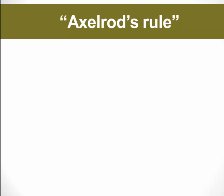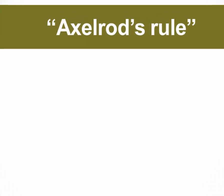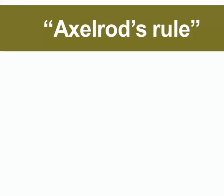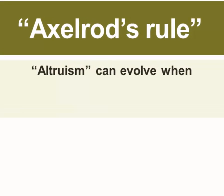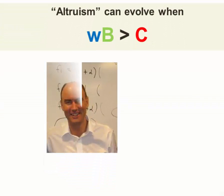We're going to introduce a new model, and we're going to call this Axelrod's Rule. Although that label isn't generally in use, it's very helpful for our purposes. Axelrod's Rule states that altruism can evolve when W times B is greater than C. You'll see why I'm calling it Axelrod's Rule, because it's so similar to Hamilton's Rule.